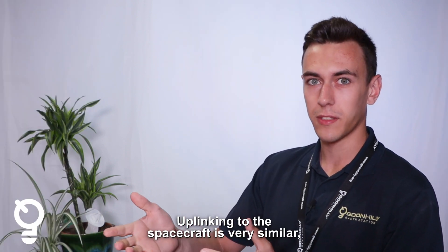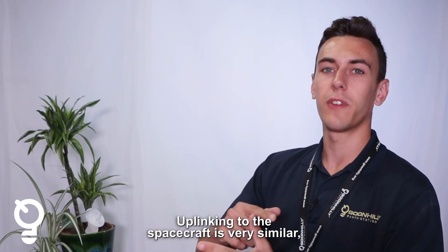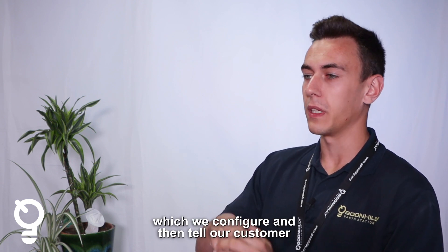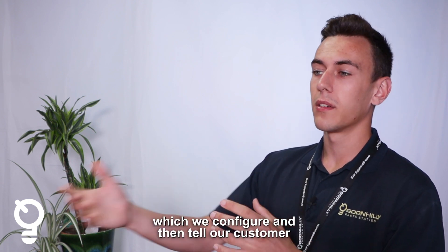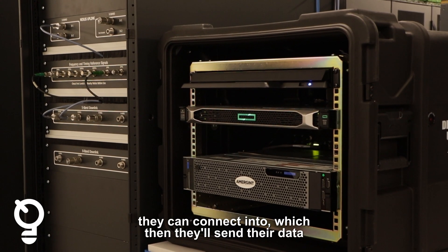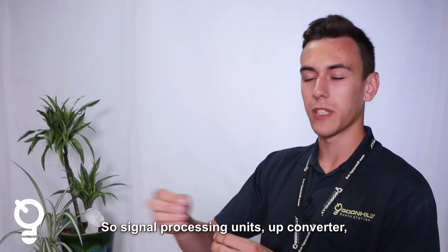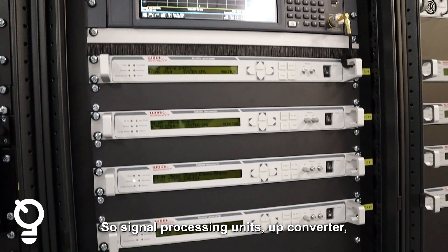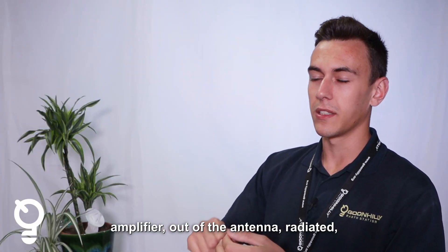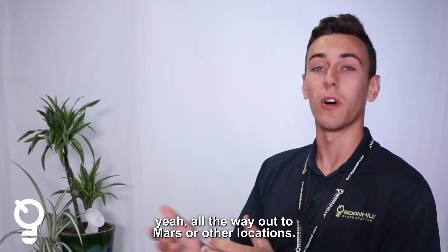Uplinking to the spacecraft is very similar but in reverse. We've got the signal processing unit which we configure, and then we tell our customer they can connect into it. They'll send their data off to the spacecraft through the signal processing unit, upconverter, amplifier, out of the antenna, radiated all the way out to Mars or other locations.